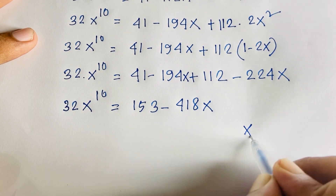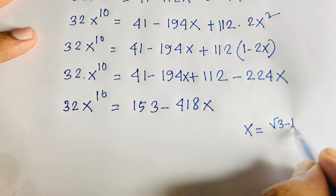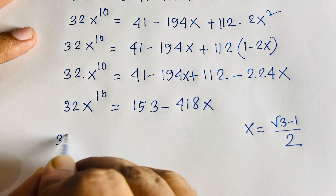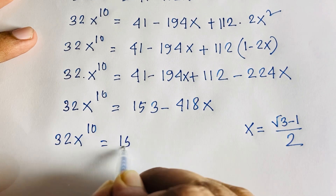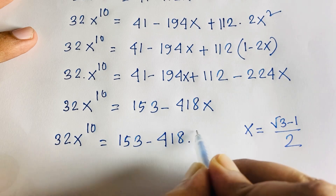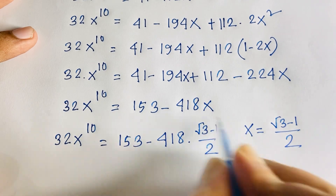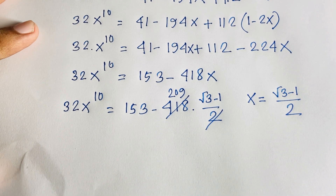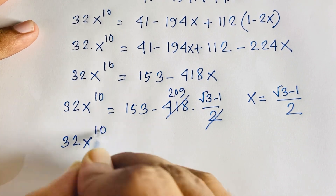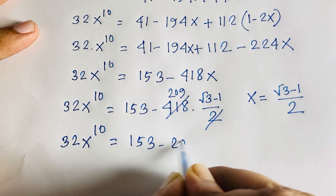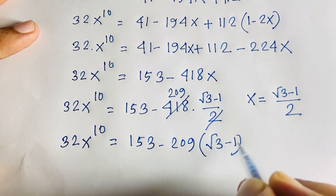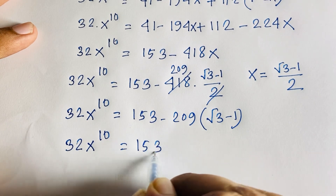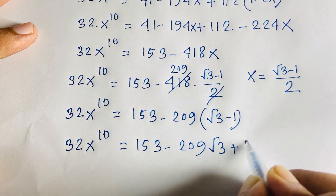Recall that x = (√3 minus 1)/2. Substituting 418x = 418 times (√3 minus 1)/2 = 209(√3 minus 1) = 209√3 minus 209. So 32x^10 = 153 minus (209√3 minus 209) = 153 minus 209√3 plus 209.